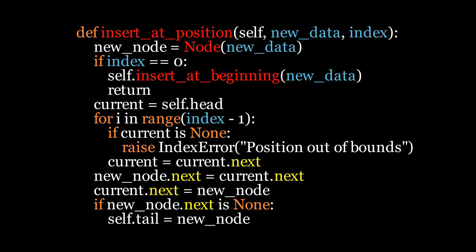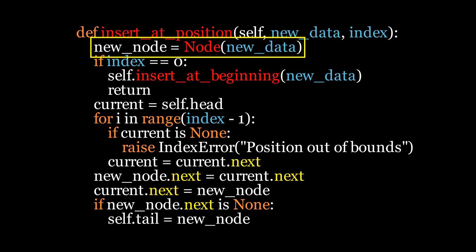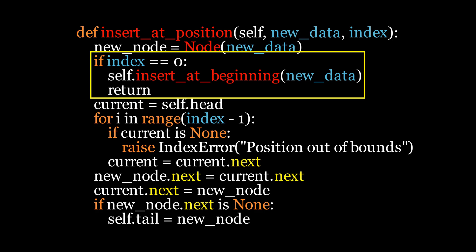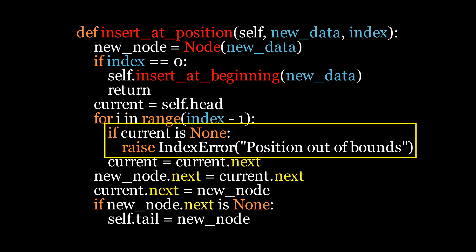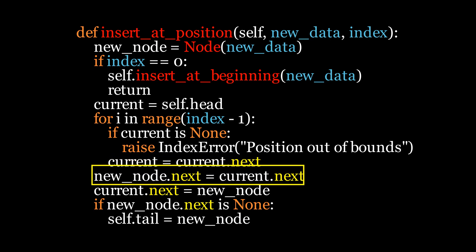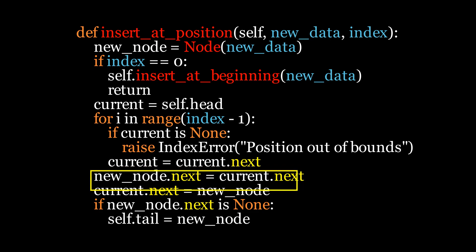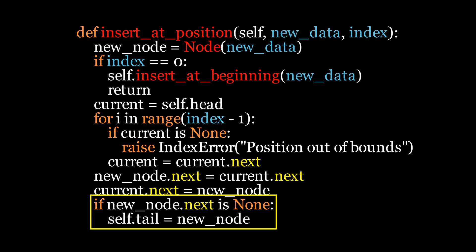Next, we'll discuss inserting at a specific position in the list. We define the function taking new data and index as input parameters. We first create the new node. If the index is zero, we perform the insertion at the beginning operation. Otherwise, we create a current variable initially set to the head node and run a loop to traverse just before the target index. If current becomes None while traversing, it indicates an index-out-of-bounds error. Otherwise, we update current to its next node. Once the loop ends, we update the next pointer of the new node to point to the next node of current, and update the next pointer of current to point to the new node. Finally, if the new node is the last node, we update the tail pointer.